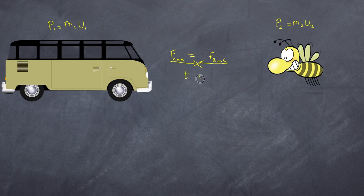The second thing you need to remember of course is that the time for the collision is going to be the same. It goes really without saying it's not possible for the bee to experience the collision at a different time interval to the combi.